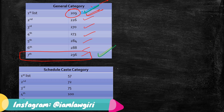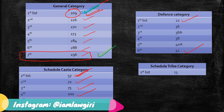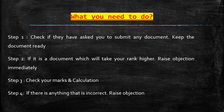Looking at other categories from the first list: in Schedule Caste category, ranks 57, 72, 75, and 100 were called. In Defense category, first rank was 22 and last was 41. In Schedule Tribe category, rank 13 was invited in the first list.